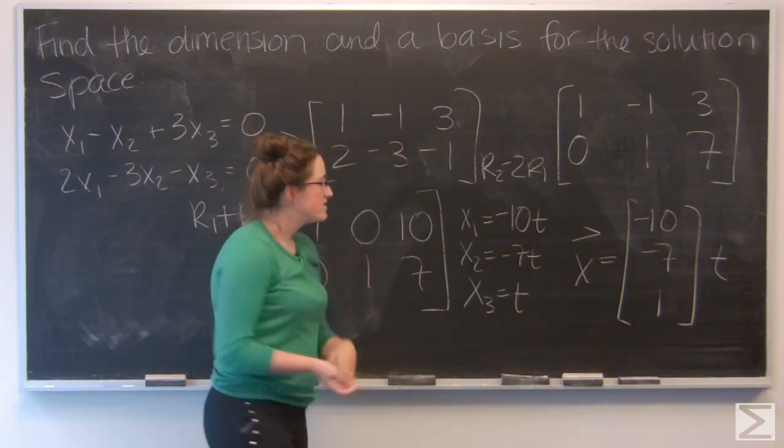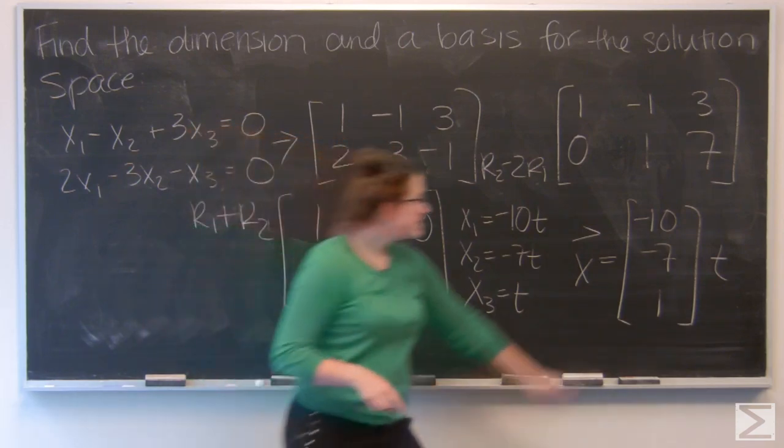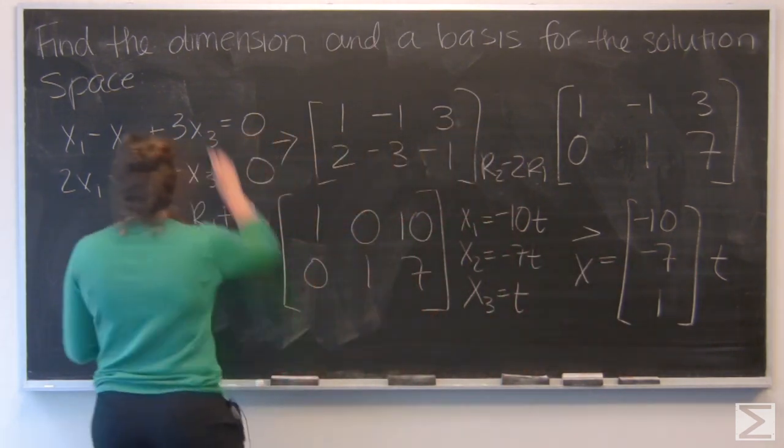Now, for dimension, that is the number of free variables I'm working with. Here, it's only 1t. So the dimension is just going to be 1.